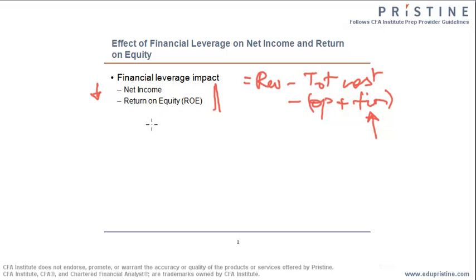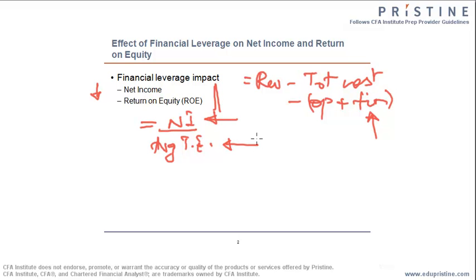Return on equity is defined as net income divided by average total equity. Notice, the numerator is an income statement measure and the denominator is a balance sheet measure, and therefore we take the average of beginning and ending equity so that we can compare these two. An increase in financial leverage increases the return on equity measure.